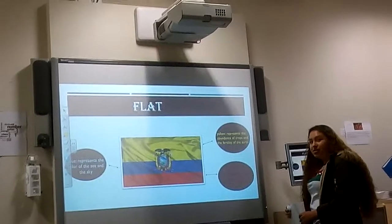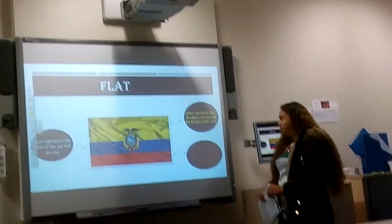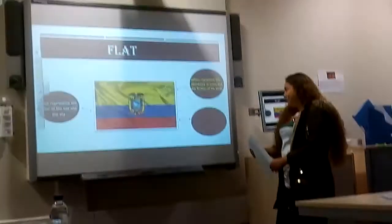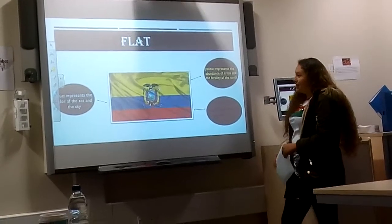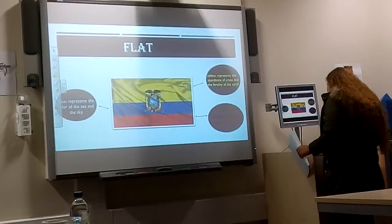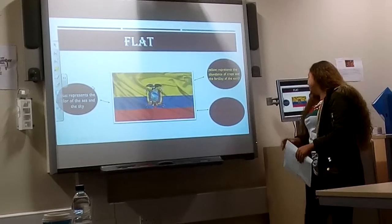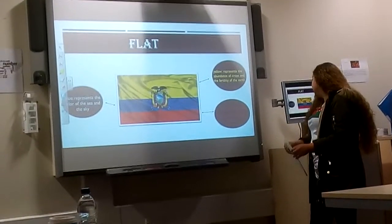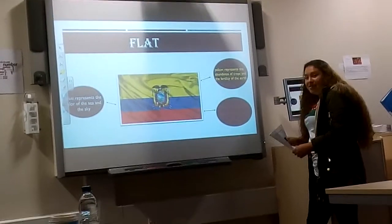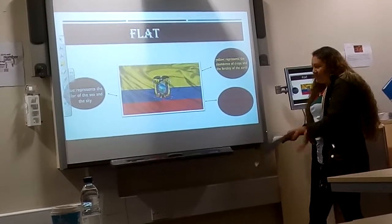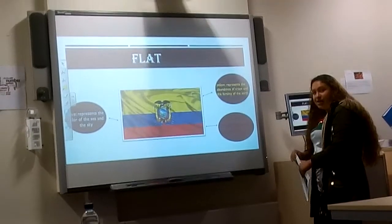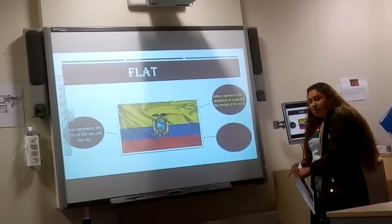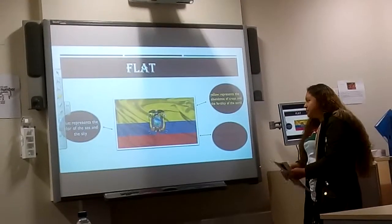Crops — the abundance — the soil, the earth is rich. Now let's look at the blue. Try to use your own words — what does the blue represent? The ocean, the sky — the sea and the sky.